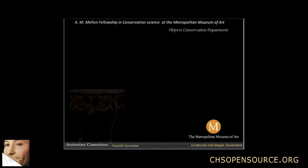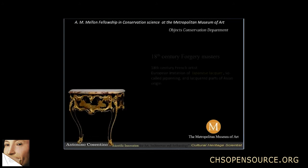Object conservators and curators of French furniture were studying five objects attributed to an 18th century French cabinet maker Bernard van Riesenberg.